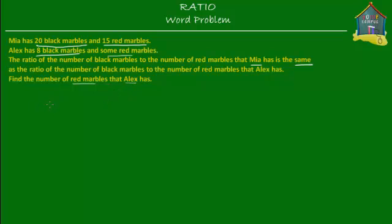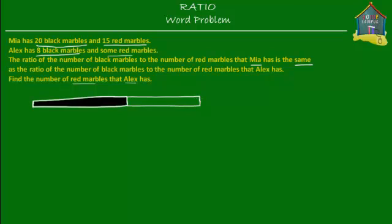Let's put this on a model first. Mia has 20 black marbles and 15 red marbles. These are the black marbles that Mia has and these are the red marbles that she has — 20 black and 15 red. What is the ratio of the number of black marbles to the number of red marbles that Mia has? The ratio is quite simply 20 to 15.